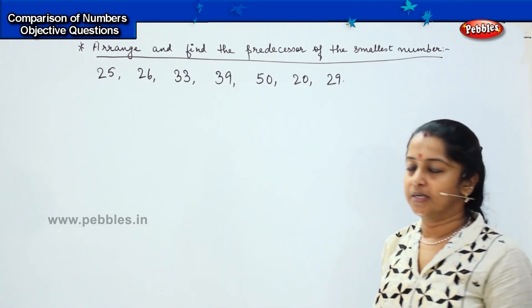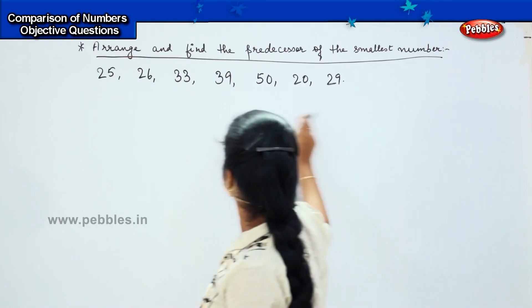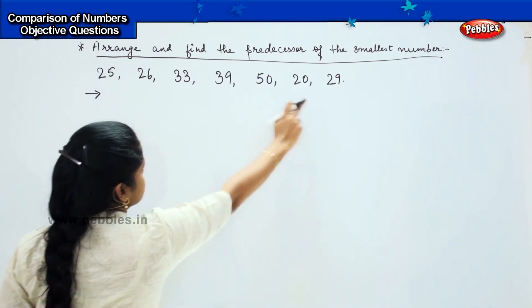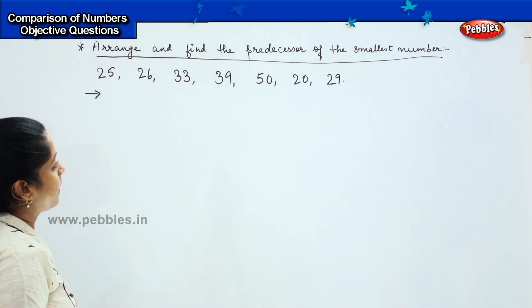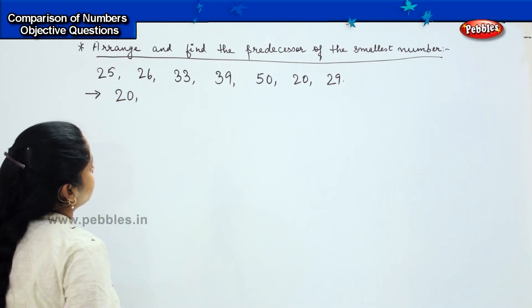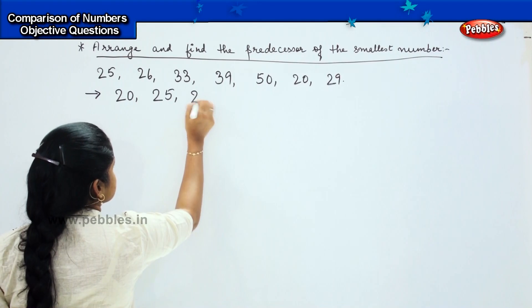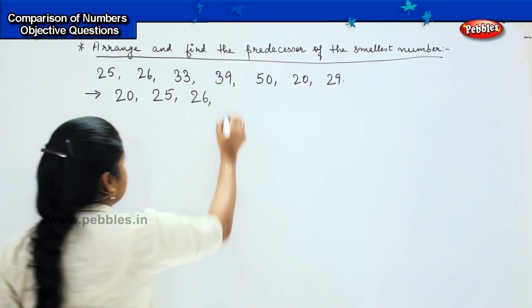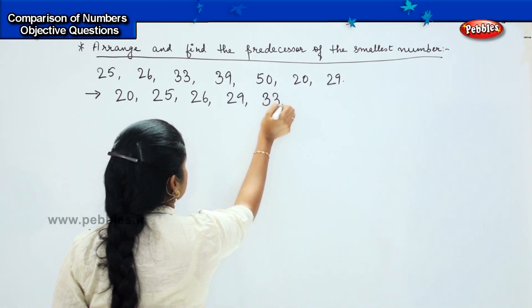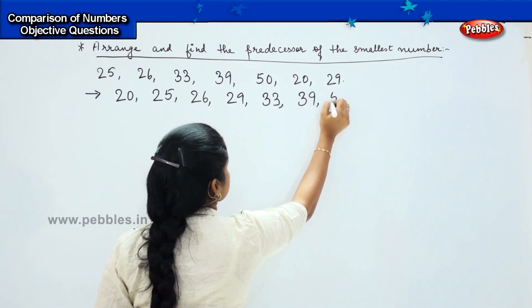These are the set of given numbers. First, you have to arrange from small to big. Shall we arrange from small to big? The first step will be arranging from small to big. The smallest number from the given lot is 20. Then comes 25. After that, 26. Then 29. Afterwards, 33. Then 39, and finally 50.